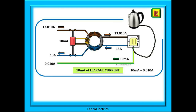A year or two later the same kettle is still in use but has a small amount of leakage current. This leakage — 10 milliamps — flows along the earth wire. Look at what is flowing out of the circuit: 13 amps on the neutral and 10 milliamps or 0.010 amps on the earth. Add these together and this must be what is going in on the phase wire: 13.010 amps. It is a 30 milliamp RCD so nothing happens.